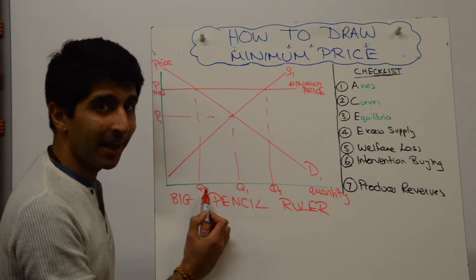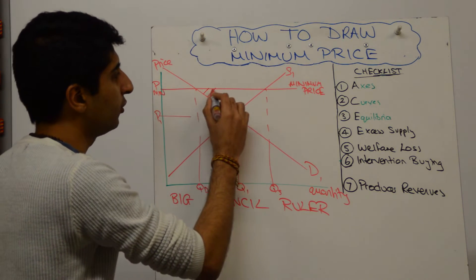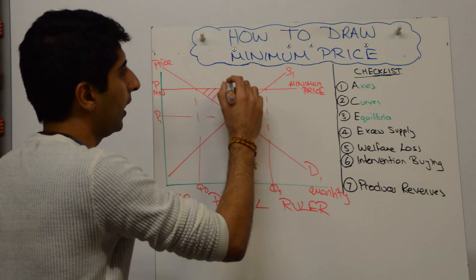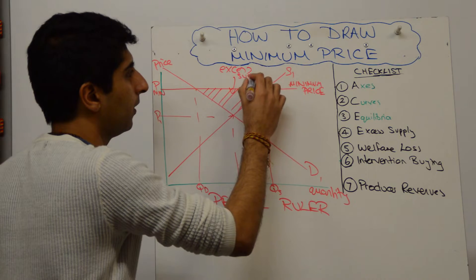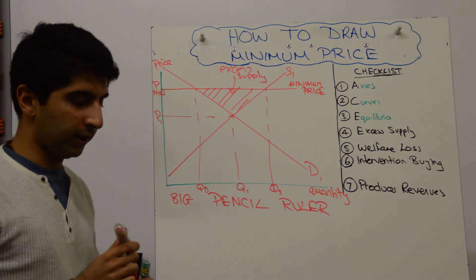Supply is greater than demand, so we can label and shade in this triangle to make reference to the fact that there is an excess supply now in the market. That's all well and good.